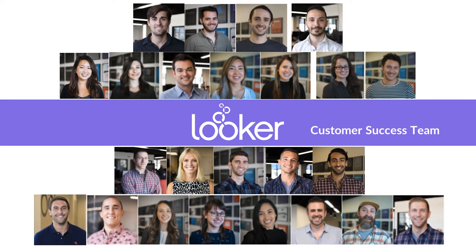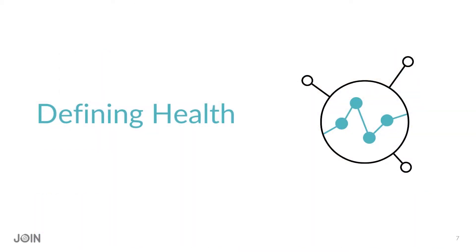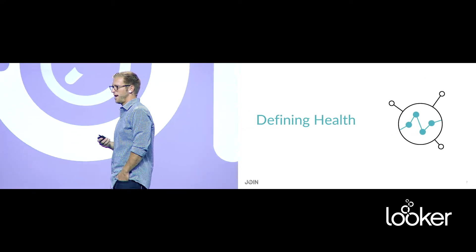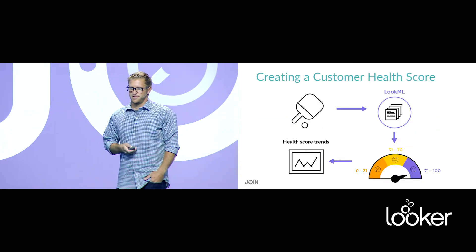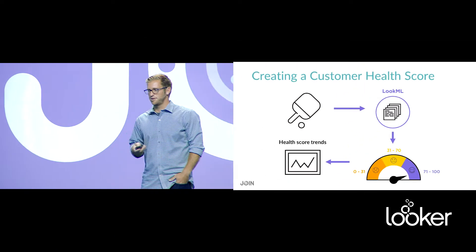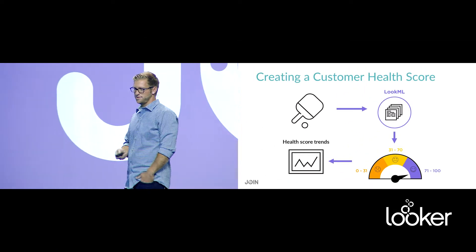Our charter as a team is to ensure that our customers are achieving and recognizing the full value of Looker, and of course we're using data in Looker to measure our effectiveness. A very important part of our customer success team's Looker usage is around customer health and how we define that. We take our event collector data, analyze how customers are interacting with the product, define in LookML what we believe to be a healthy customer, and output a score on a scale of 0 to 100. This is based on a rolling 28-day window, so we always have an up-to-date score that's easily measured against an equal time frame to analyze trends over time.